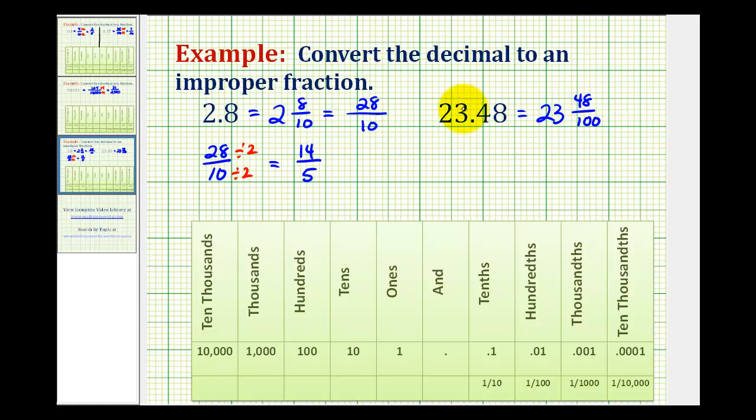And then converting this to an improper fraction, we would have 100 times 23, that's 2,300, plus 48. So we would have 2,348 over 100.